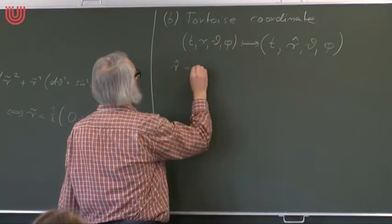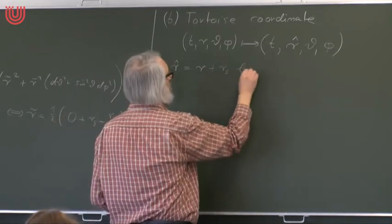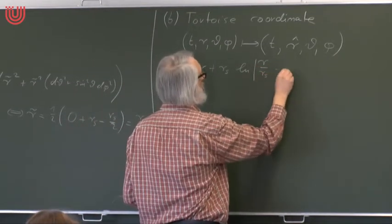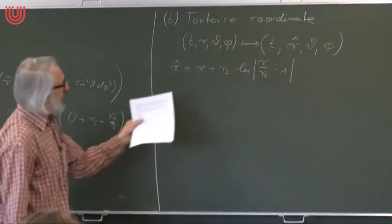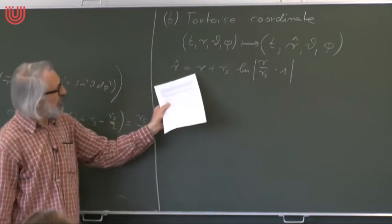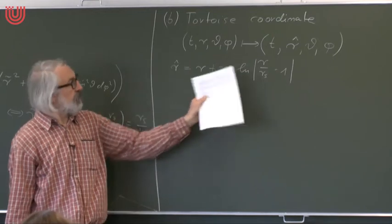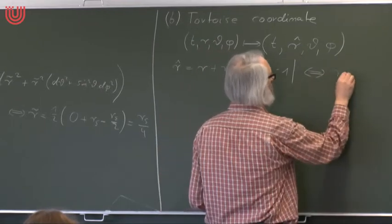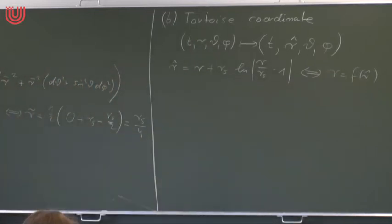The new coordinate r-hat equals r plus rs times the logarithm of r over rs minus one. This is an equation which cannot be solved for r in terms of elementary functions — that's what one calls a transcendental equation. There is a unique inverse function, but it cannot be expressed in terms of elementary functions. It is a one-to-one transformation of the radius coordinate.